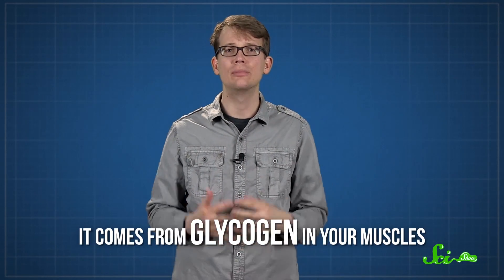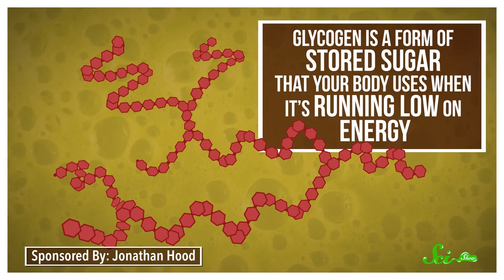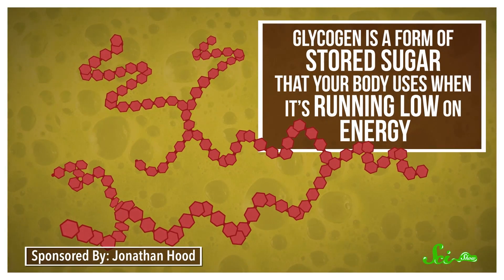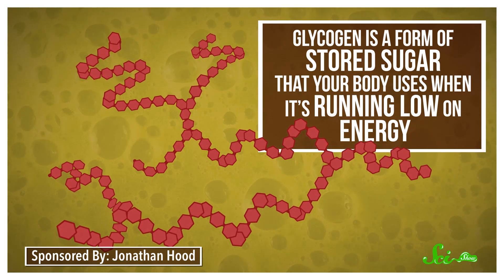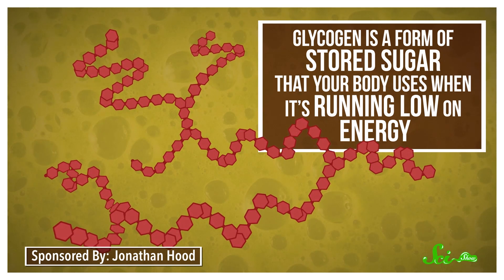But despite what it sounds like, this water weight isn't just the weight you lose from peeing out a bunch of water, it actually comes from glycogen in your muscles. Glycogen is a form of stored sugar that your body uses when it's running low on energy, like when it's getting way fewer calories than usual, all in the form of juice. As soon as you start eating normally again, your body will replace those glycogen stores, and you'll bounce right back to wherever you were.